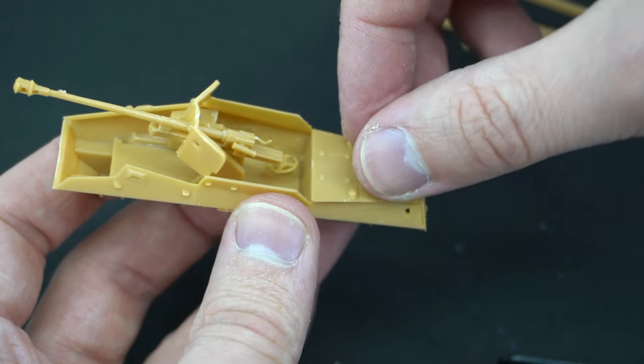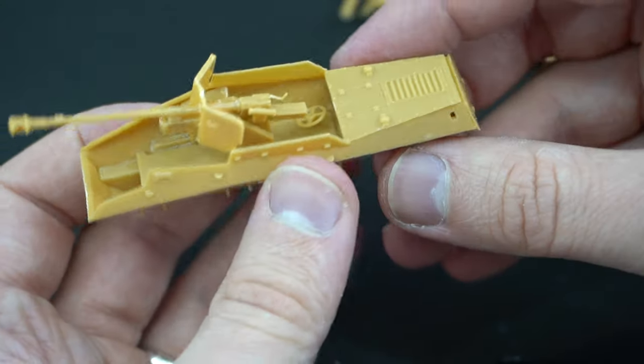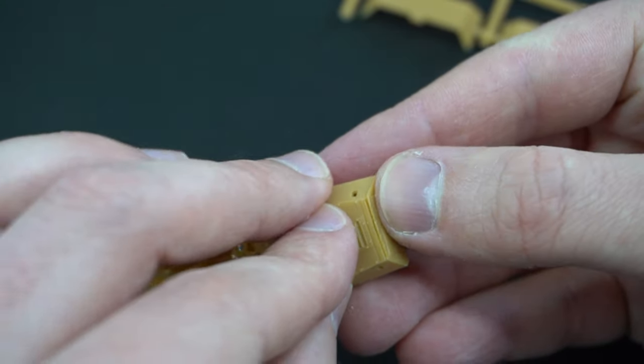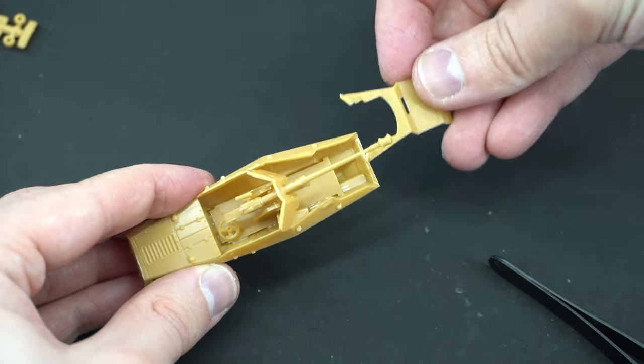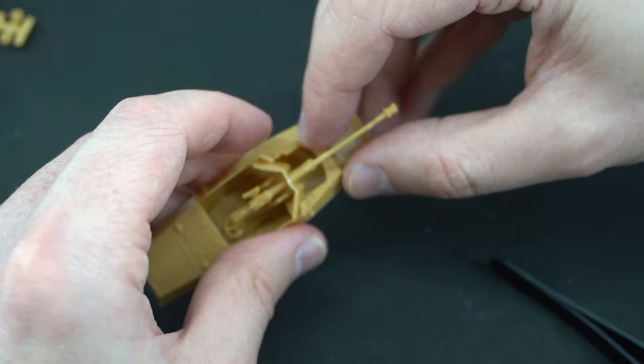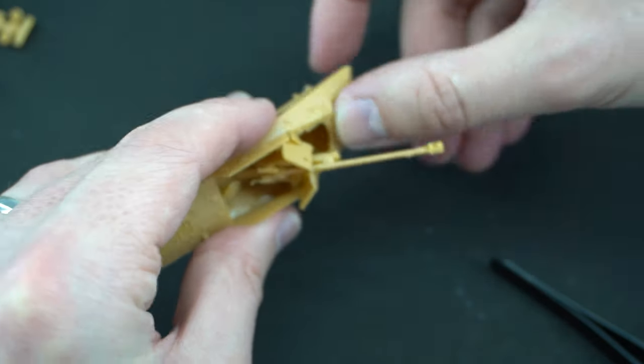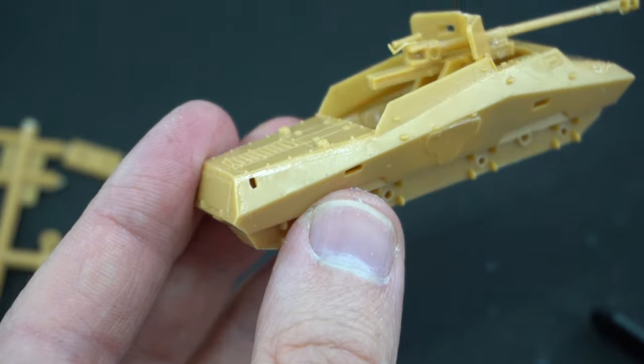Up next, the rear armour plate was glued into position at the back of the vehicle and then this was followed by the front armour plate. Generally, the fit of the parts is quite good and the gaps are quite minimal, so they did a reasonable job of designing this back in the day.